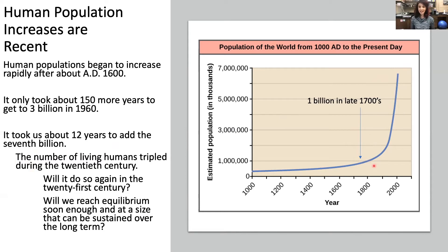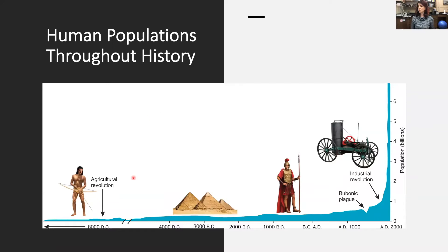The question now is: are we going to see a similar increase in the 21st century, or — as we can learn from community ecology and life strategies — are we going to reach an equilibrium soon enough at a size that can be sustained? Putting this into historical context, population was very low at the agricultural revolution, through ancient Egypt and the Roman Empire, staying under 1 billion. There's a visible dip representing the bubonic plague, and it was only until the Industrial Revolution that we see the skyrocket in human population.